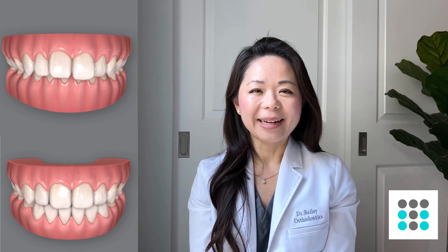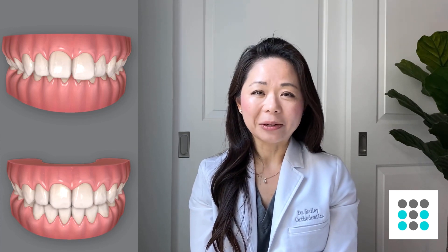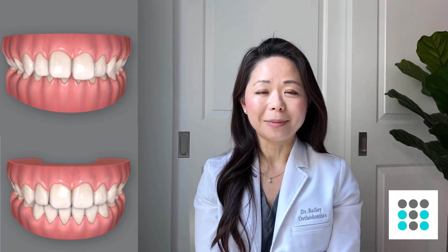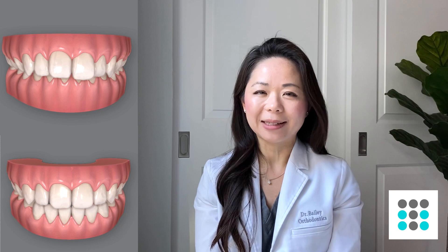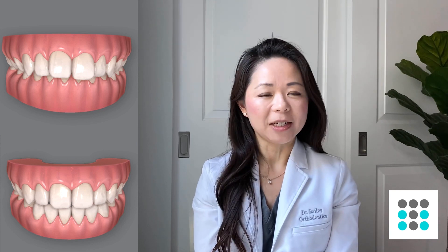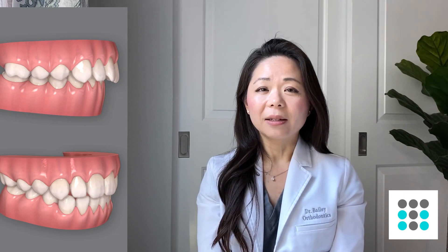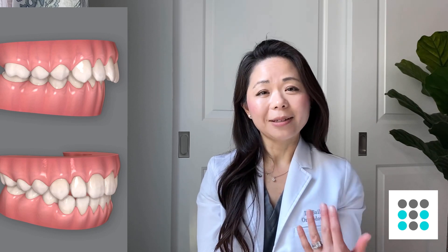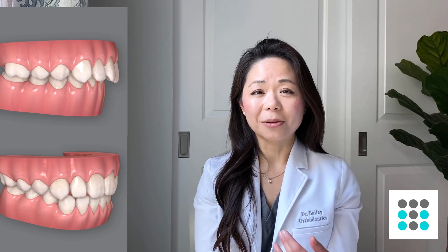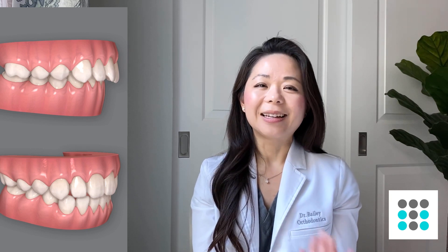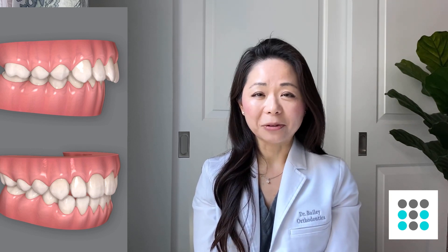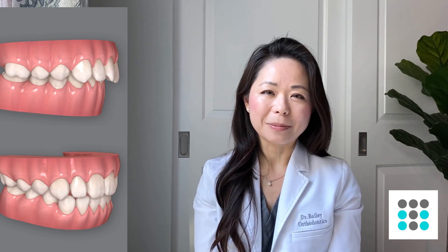So hopefully you understand what an overbite and overjet now is. Overbite is the vertical overlap of the top and bottom incisors — usually we like to see about a 15% overbite. Overjet is how far the top front teeth are in relationship to the bottom front teeth. An ideal overjet is about two to three millimeters.